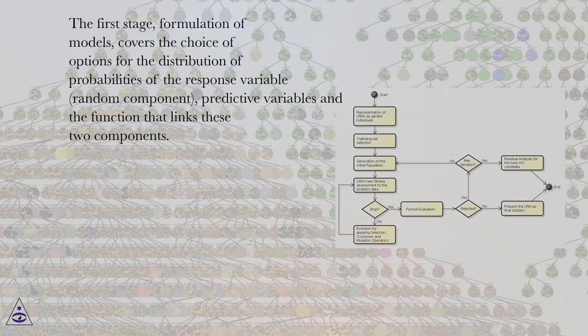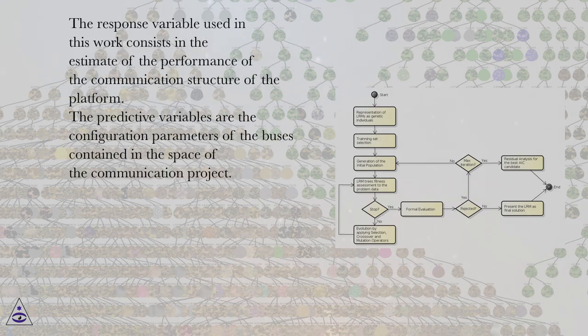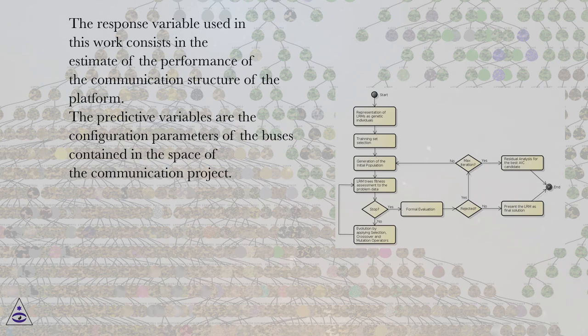The first stage, formulation of models, covers the choice of options for the distribution of probabilities of the response variable (random component), predictive variables, and the function that links these two components. The response variable used in this work consists in the estimate of the performance of the communication structure of the platform. The predictive variables are the configuration parameters of the buses contained in the space of the communication project.